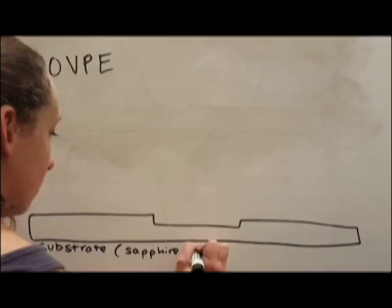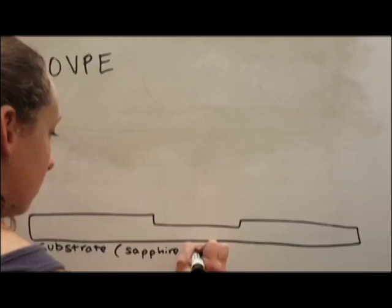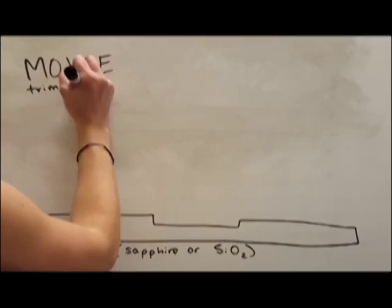However, the problem with these substrates is that they're not perfectly aligned to the crystal structure of gallium nitride. Even though there is this mismatch, the growth of gallium nitride on the substrate is still good enough to produce these blue diodes that they need for manufacturing.